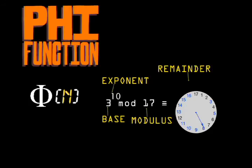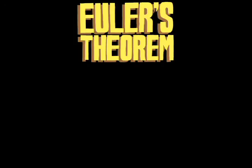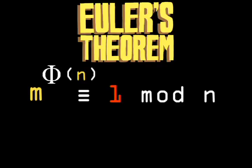Step 3: how to connect the phi function to modular exponentiation. For this, he turned to Euler's theorem, which is a relationship between the phi function and modular exponentiation as follows. m to the power of phi n is congruent to 1 mod n.